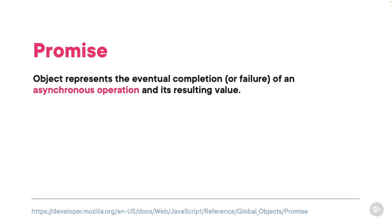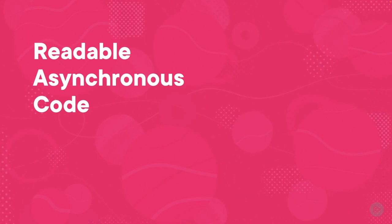Promises represent the eventual completion — similar to the xhr.onload function. Promises don't always have to execute instantly, but a promise tells you that when it does complete, you'll be able to work with its value. Another way to think of it is that promises allow developers to write asynchronous code in a more clear and less error-prone manner. That was a big part of my motivation when I first learned promises — even though the concepts were not intuitive, I persisted because I wanted my JavaScript code to be more readable.